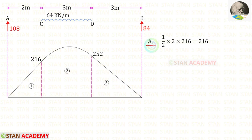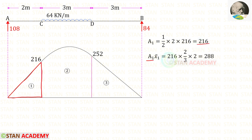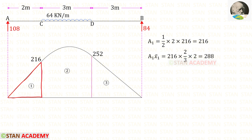Let us find Area 1. It is a triangle, so Area = (1/2)·b·h. Here the breadth is 2 and the height is 216, giving Area 1 = 216. Now let us find Area 1 · x̄1. We already know Area 1 = 216. For this triangle the centroid distance towards the left is (2/3)·breadth. Here the breadth is 2, so x̄1 = (2/3)·2. Therefore Area 1 · x̄1 = 288.